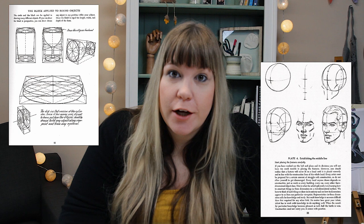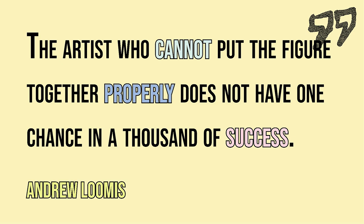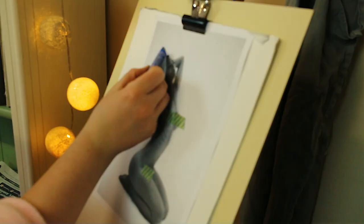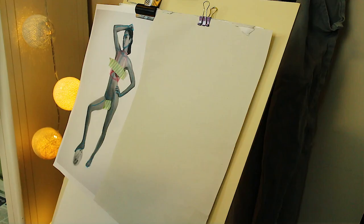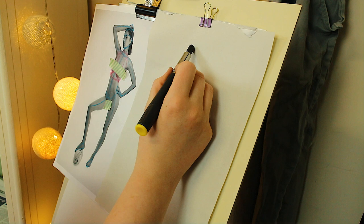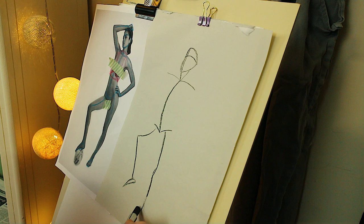Lomas also said: 'The artist who cannot put the figure together properly does not have a chance in a thousand of success.' So I think what he's trying to say is anatomy and figure drawing are important if you're trying to draw any kind of people at all. So we've got to study them. The human figure is a really complex subject to study, which is why it's included in the fundamentals.